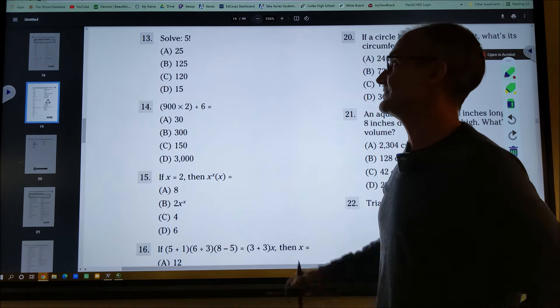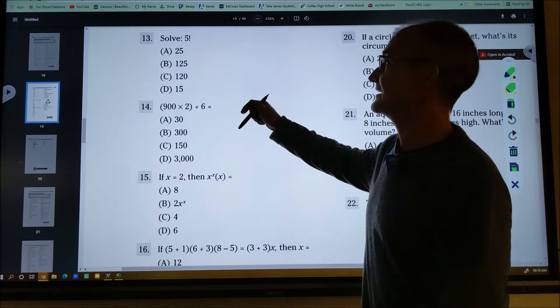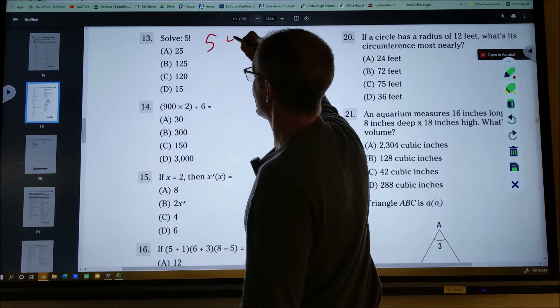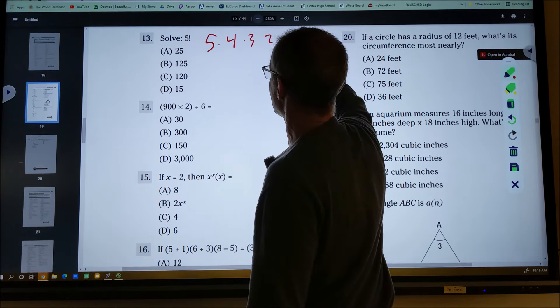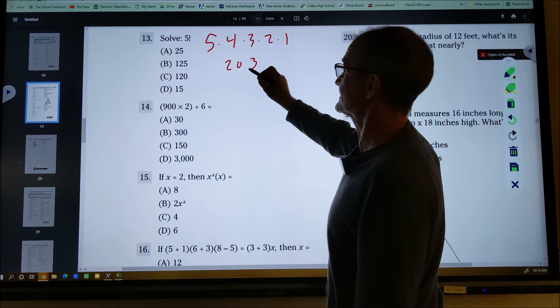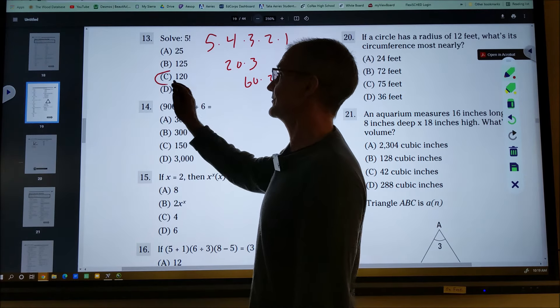So number 13 here, five. That exclamation point does not mean five. It means five factorial, which is five times four times three times two times one. Five times four is 20. Times three is 60. Times two is 120. So five factorial is 120.